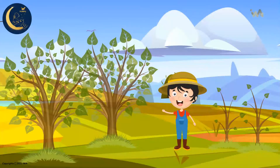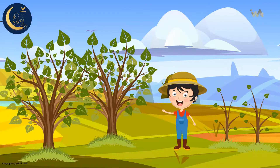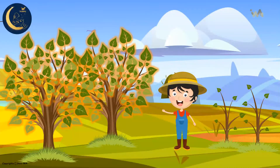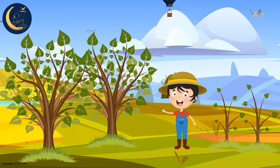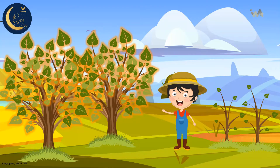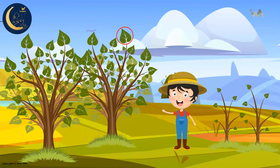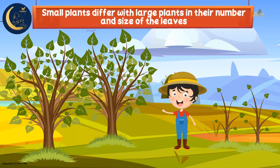Look at these plants here. Some of them are large and some are small. Do you notice any differences between them? The large plants have more leaves while the small plants have less leaves, and the size of the leaves differ. These leaves are large and these are small. So small plants differ with large plants in their number and size of the leaves.